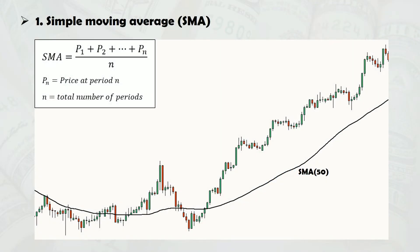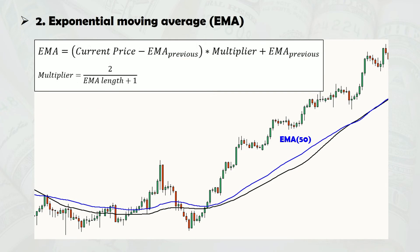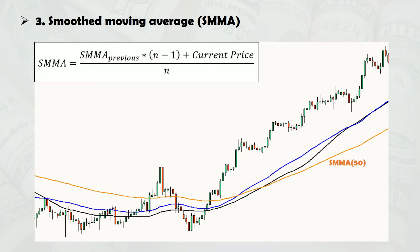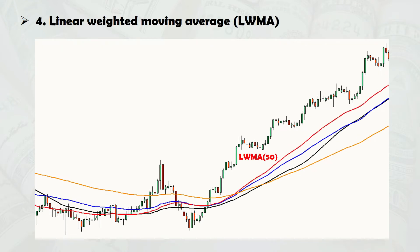First up is the good old simple moving average. Next is its popular cousin, the exponential moving average, which places more emphasis on recent prices. Third is the smooth moving average, an alternative to the SMA if you prefer slower but perhaps more reliable signals. Like the EMA, the linear weighted moving average also assigns a heavier weighting to recent data.